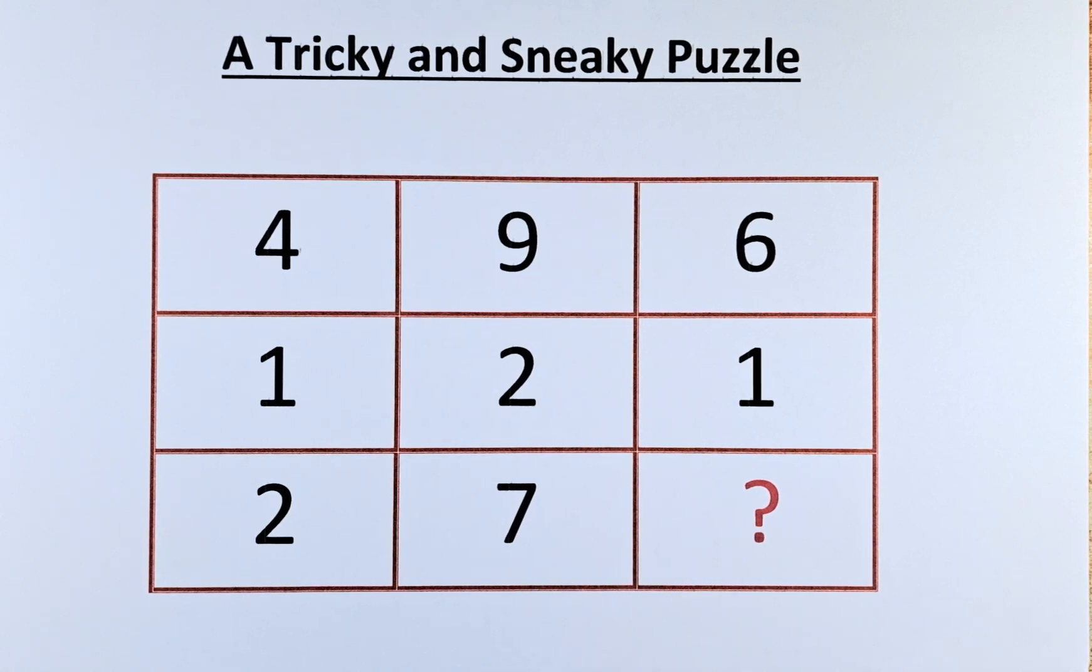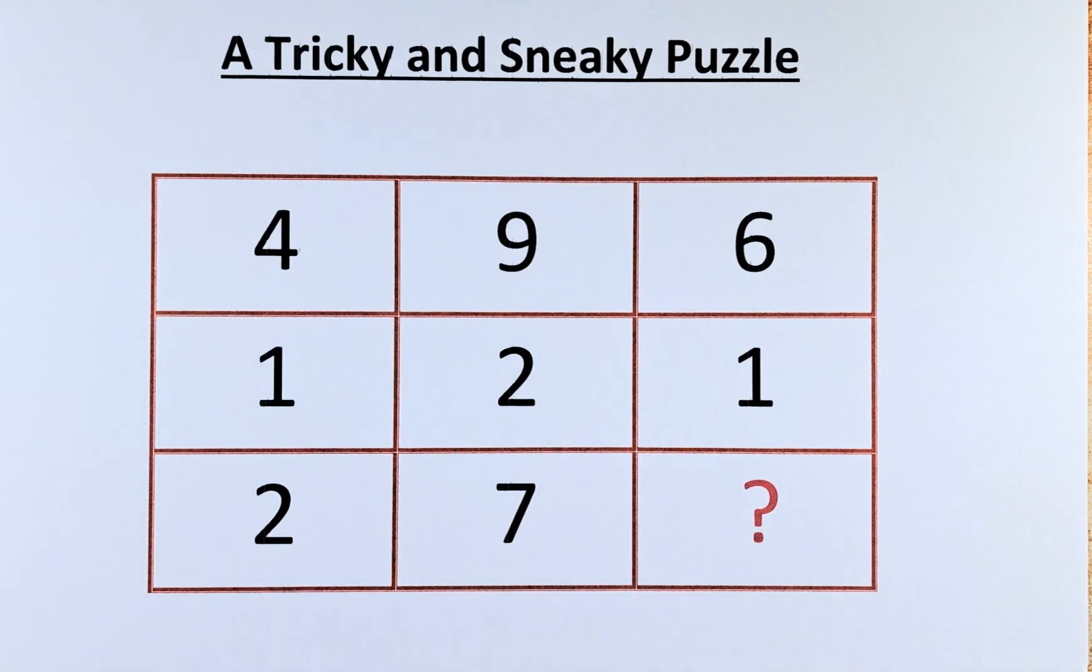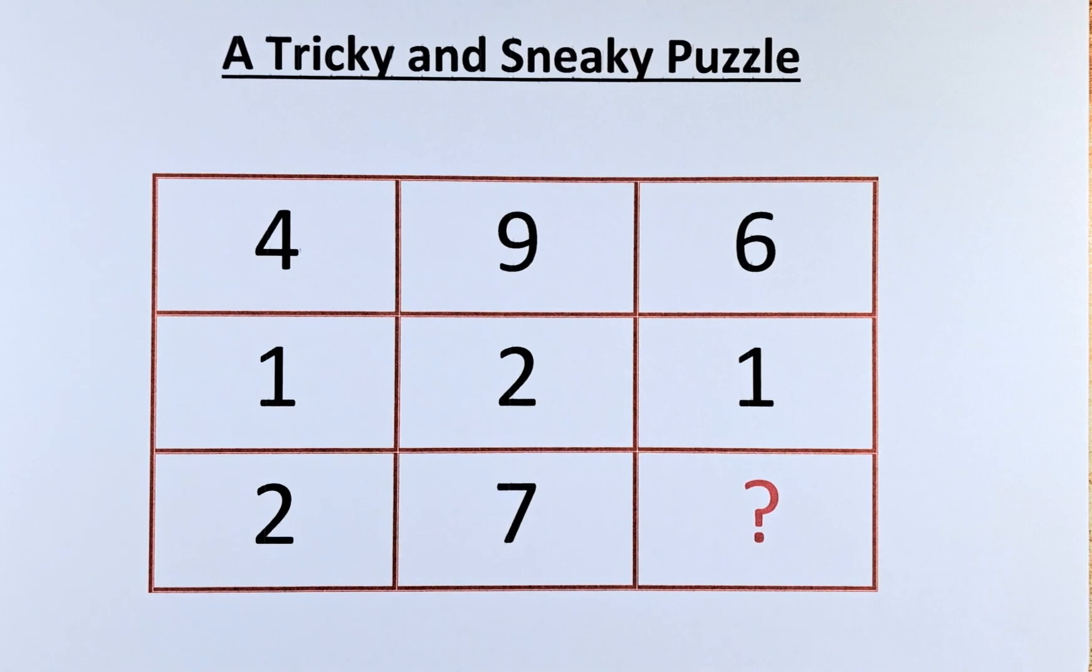The numbers in the puzzle are as follows. In the first row, we have 4, 9, 6. In the second row, we have 1, 2, and 1. And in the final row, we have 2, 7, and the question mark.